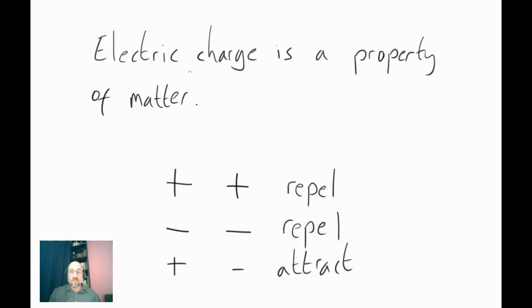So what is electric charge? Well, electric charge is a property of matter. It's something that we can measure. And it turns out that there are two types. One type is positive charge, and the other type is negative charge. And we can determine these two types of charges by the way that they interact with each other.